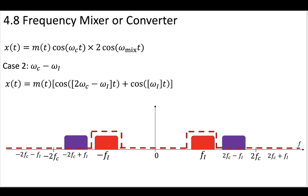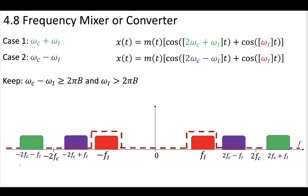That way, when you apply a bandpass filter centered at your intermediate frequency, you can eliminate the high frequency components — you can eliminate this second cosine wave. Either way, in both case one and case two, when we pass our modulated message through another mixer, these high frequency components, whether it's plus omega_i or minus omega_i, are going to be higher frequency than our intermediate frequency.